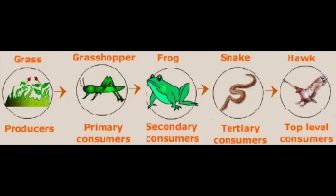This is one food chain that is in the grassland biome. The producer is grass, which gets consumed by the first level consumer — the grasshopper. The grasshopper gets eaten by the frog, which is the secondary consumer. After that, the frog gets eaten by the snake, which is the third level consumer. The snake is eaten by the hawk, and the hawk is the top level consumer.